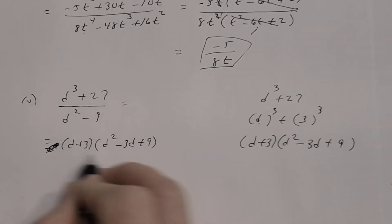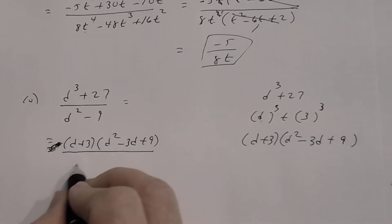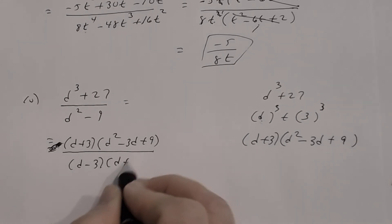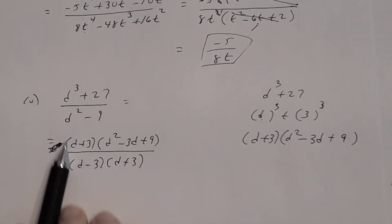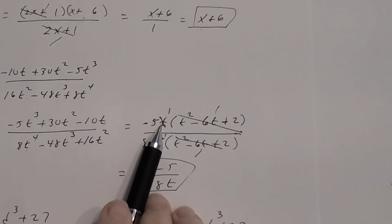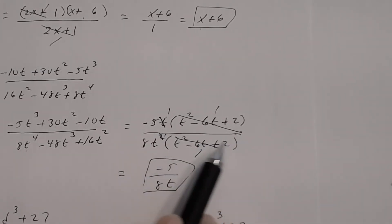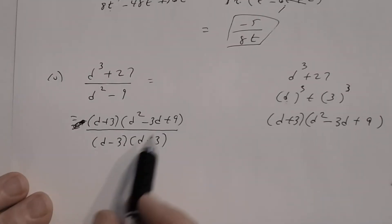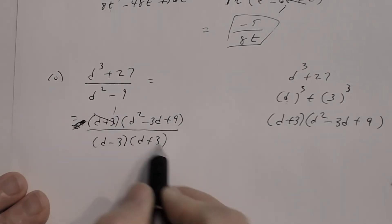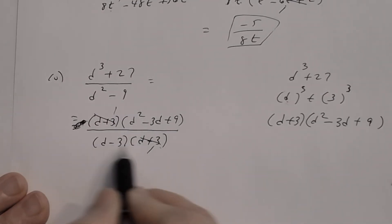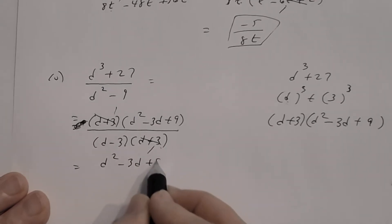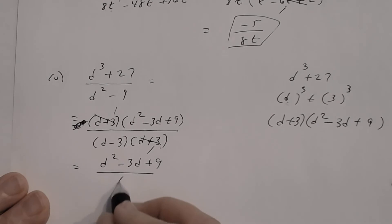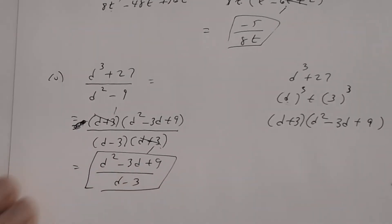Now reduce. The numerator has two factors: (d + 3) and (d² − 3d + 9). The factor (d + 3) matches in the denominator, so those divide out. The factor (d² − 3d + 9) has no match in the denominator. The answer is (d² − 3d + 9) divided by (d − 3).